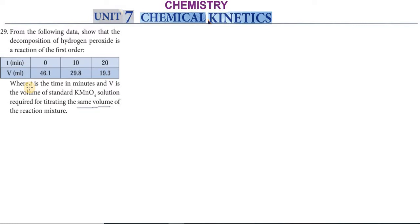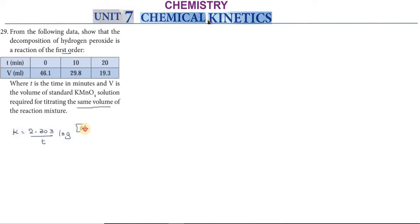Since volume of KMnO₄ is proportional to H₂O₂ present, we can use it to prove this is a first-order reaction. The rate constant for a first-order reaction is given by: k = 2.303 / t × log(a₀ / a), where a₀ is the initial concentration and a is the concentration at time t.